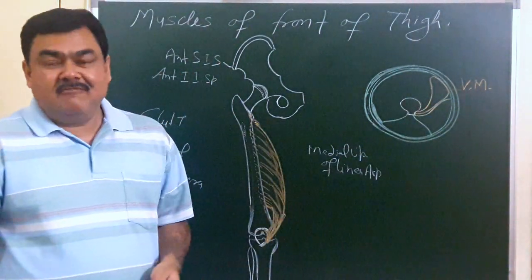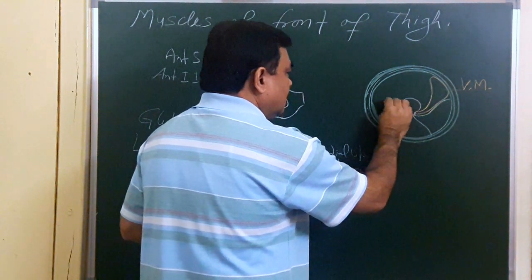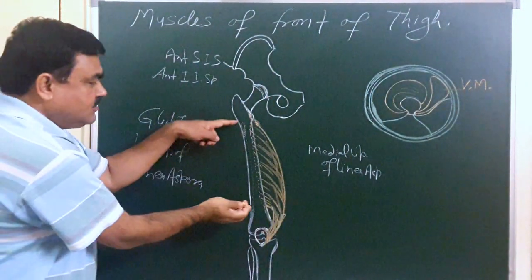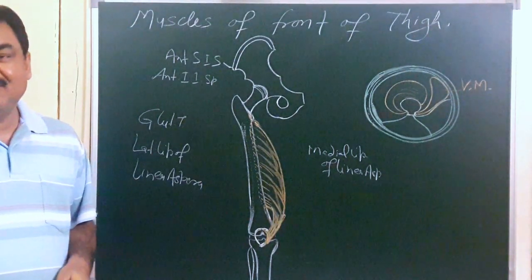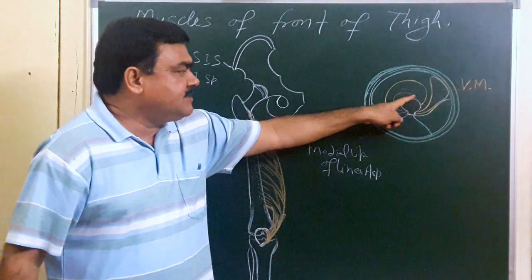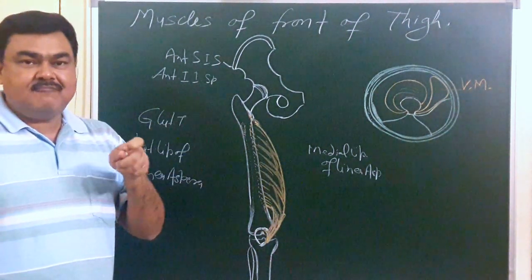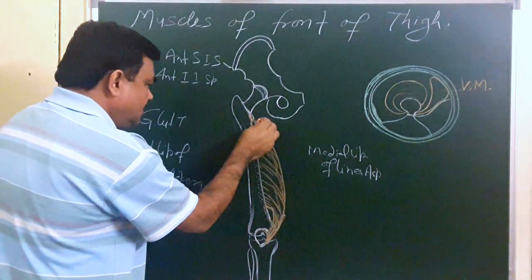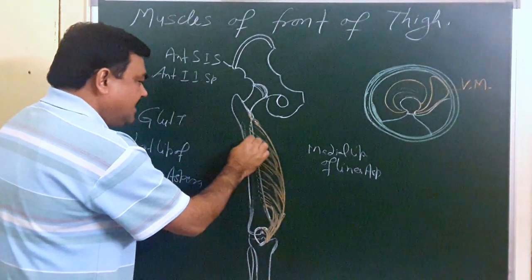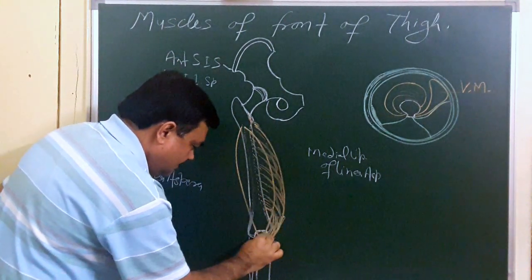The next muscle is vastus intermedialis. It takes origin from the anterior and lateral surface of the shaft of the femur — about the upper three-fourths of the anterior and lateral surface of the shaft. This muscle is inserted on the base of the patella.